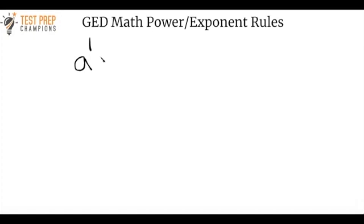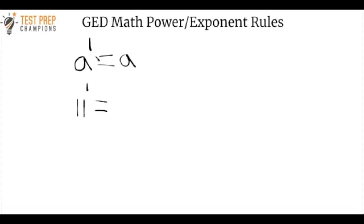Any number raised to the power of one is just going to give you the base. In other words, any base raised to the power of one is just equal to the base. So let's say 11 — 11 raised to the power of one, what does that equal? Remember from the general rule: any number raised to the power of one just gives you that base. So if our base is 11 and it's raised to the first power, the answer is just 11.